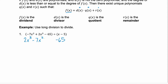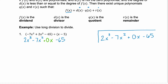I left a space because we don't have any plain linear x terms. We need to have a placeholder for that, so we're going to put 0x. Now that we have it in descending order, we can set up our long division: 2x cubed minus 7x squared plus 0x minus 65, and we're dividing this by the binomial x minus 5.